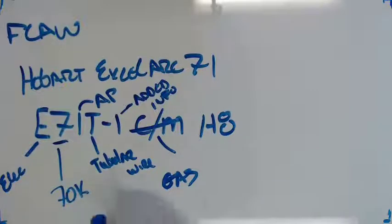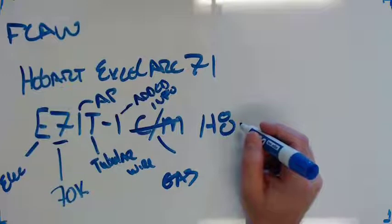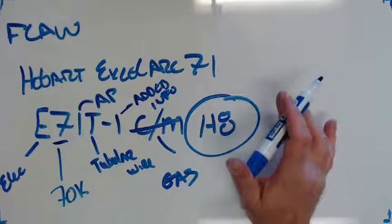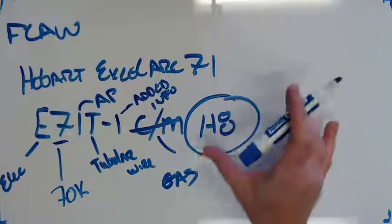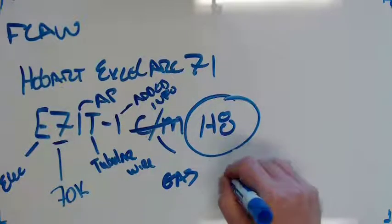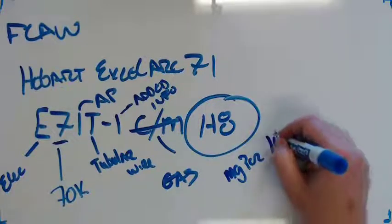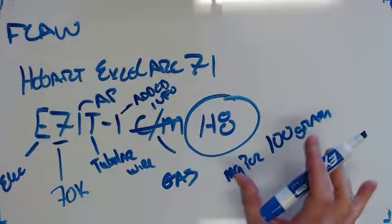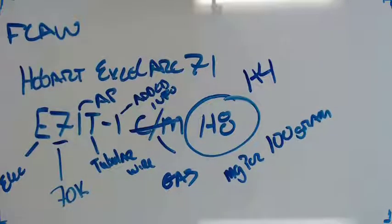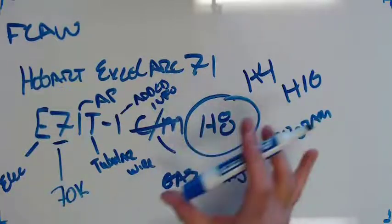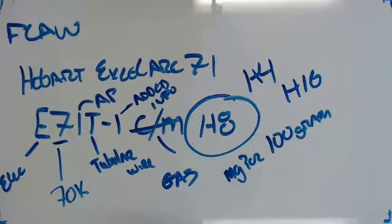H8 we also see in 7018. What H8 is telling us is how much hydrogen ends up in the finished weld. We'll talk about hydrogen in just a second, but it's a big deal. This is telling us 8 milligrams per 100 grams of hydrogen in the weld. The lower number for hydrogen is always better. You can buy H4, which costs more because they got to get more hydrogen out. You can also buy H16, which costs less. Flux core is complicated, there's a lot going on.